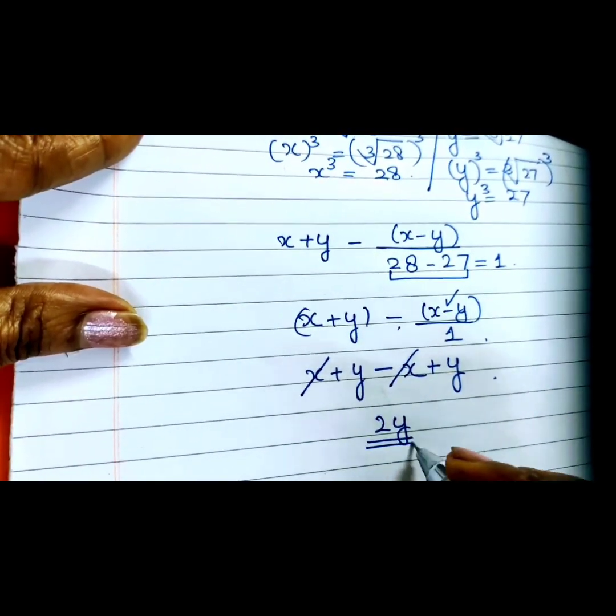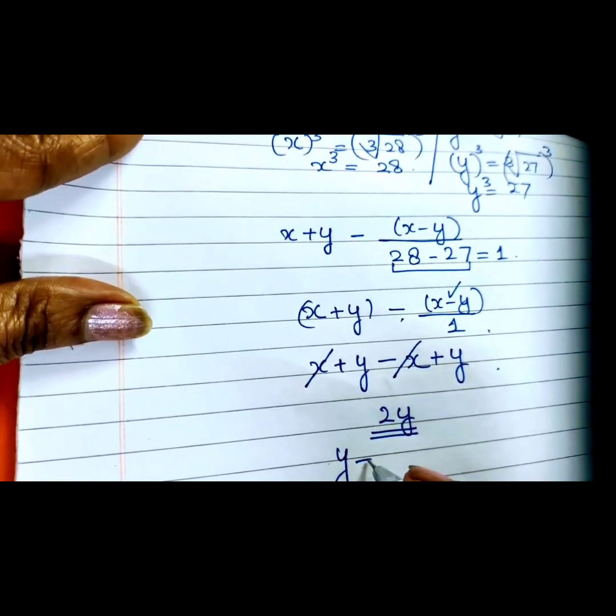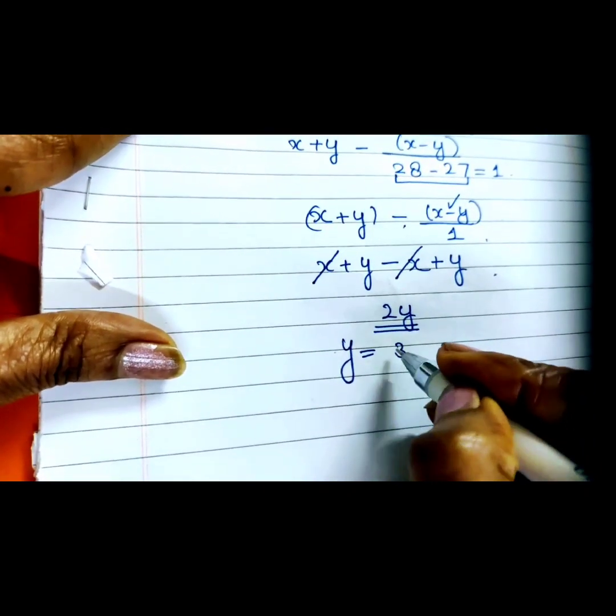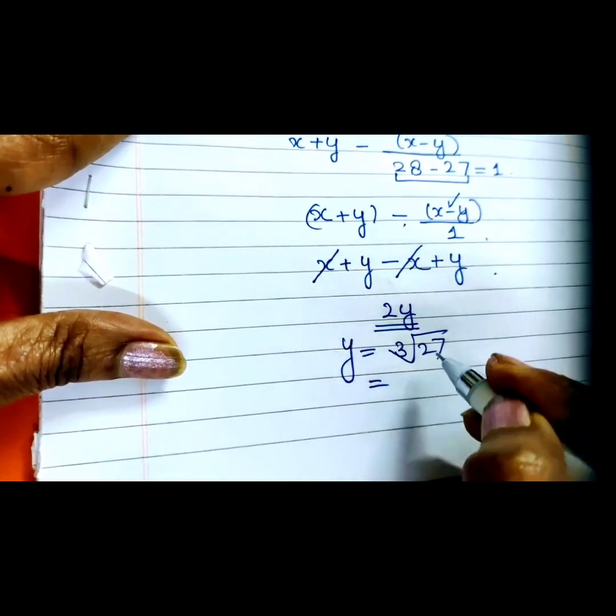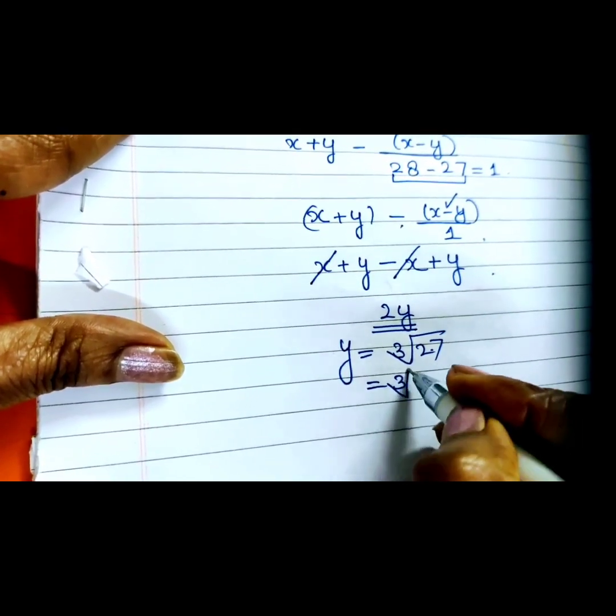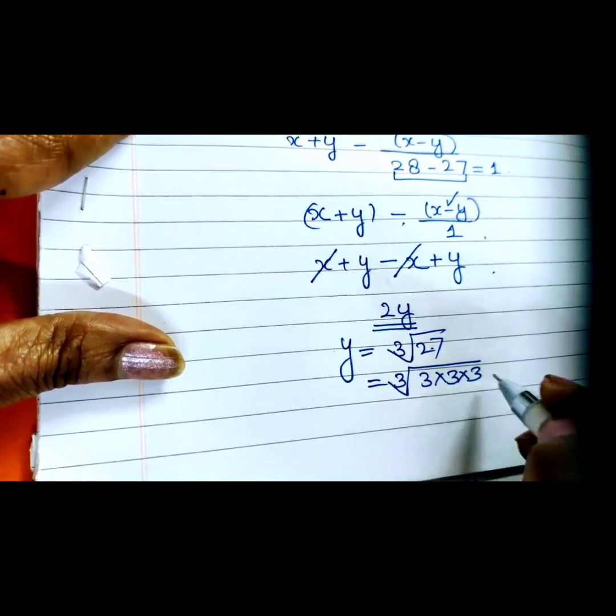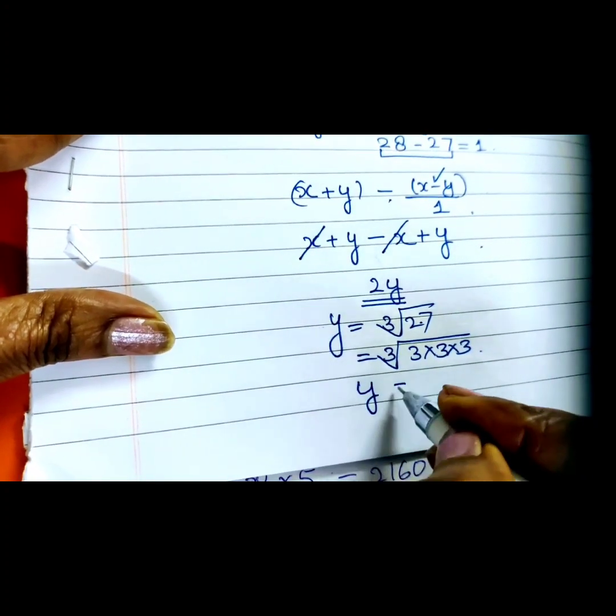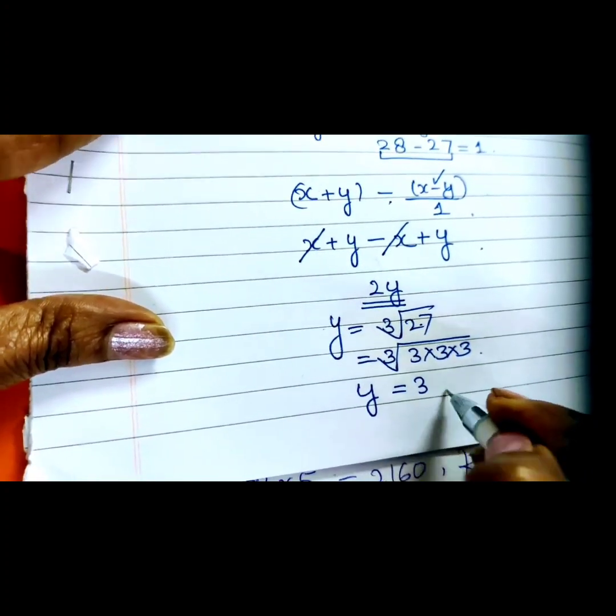we get is 2y. Now y given to us was the cube root of 27. If we factor this, 27 becomes 3 × 3 × 3, so y will be 3.